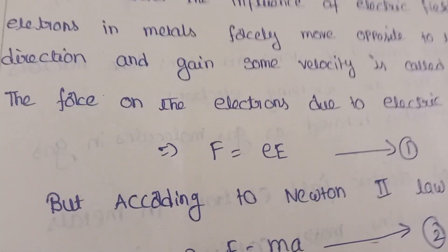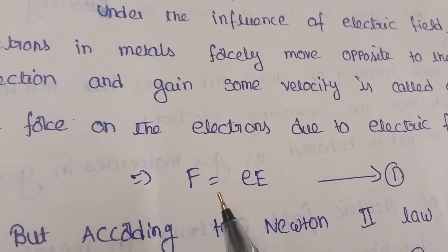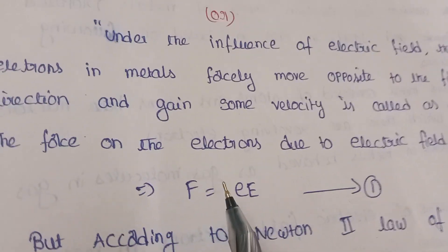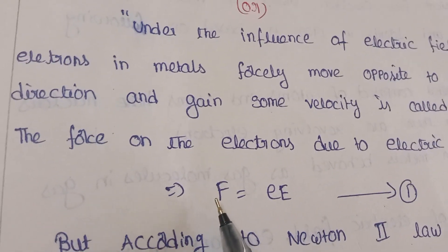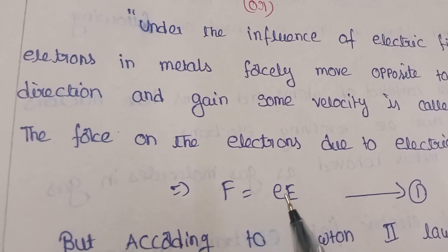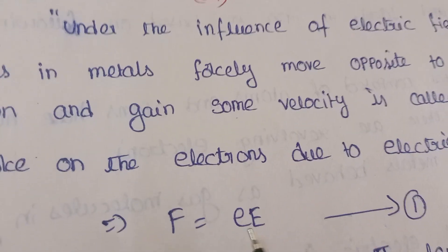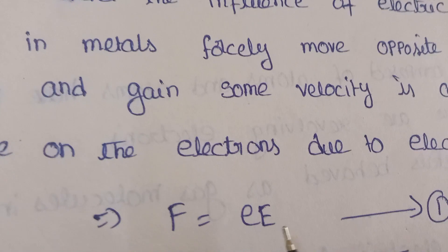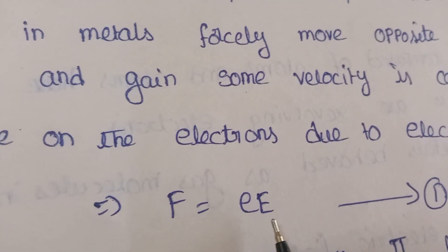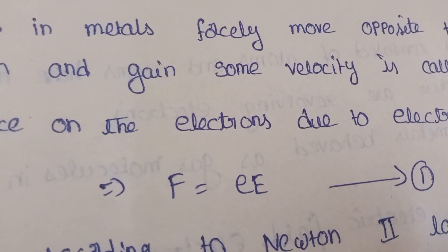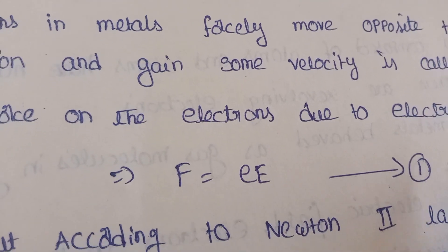Drift velocity can also be defined as the average velocity acquired by an electron. First, take the equation: force F = eE, where small e is the charge of the electron and capital E is the applied electric field. This is equation 1.